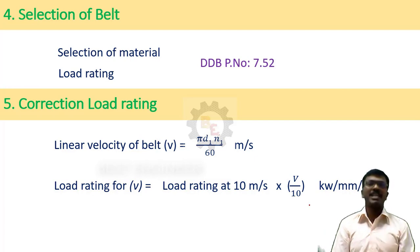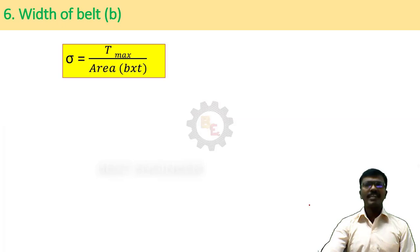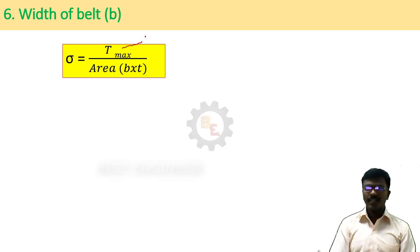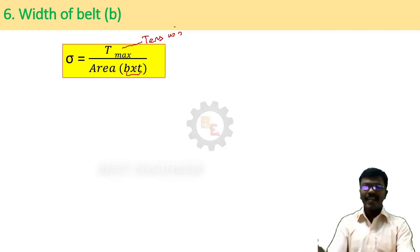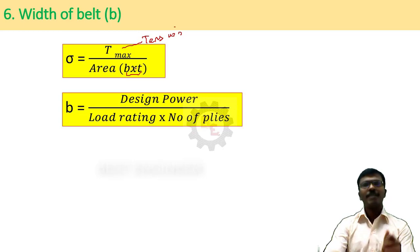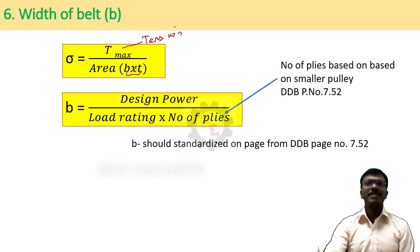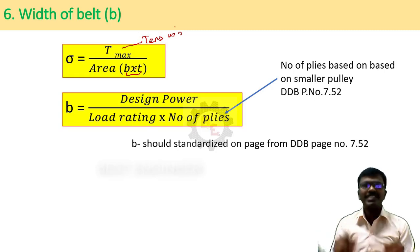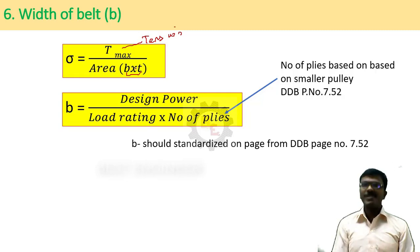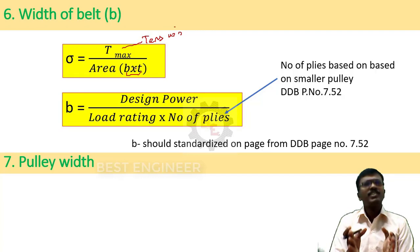Sixth step: find the width of the belt. The formula is stress = load / area. T_max is the maximum tension, and the area is B × t (belt cross section), allowing us to find the stress. The belt width is found using: width = design power / (load rating × number of plies), where the number of plies is based on the smaller pulley, taken from page 7.52. This value must then be standardized to a standard belt size available in the market. Finally, find the pulley width — the pulley width should be larger than the belt width, so add some additional width.